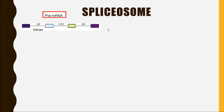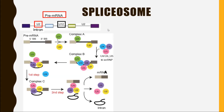There are two types of introns: U2 and U12. U2 is the most common type of intron, while U12 is the rare type. Let's see how all these snRNAs perform their function by removing U2 introns.